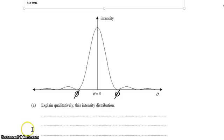I got this question wrong the first time because I didn't read the command terms correctly. I described the diffraction pattern, but the command term is explain, and that basically means explain how the intensity distribution is formed.